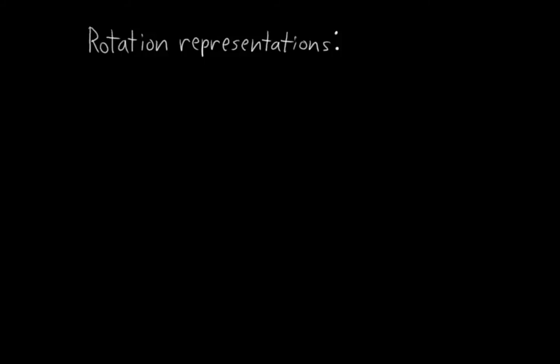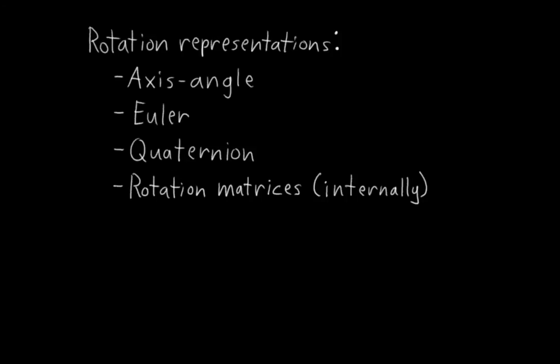Blender has three rotation representations that we can choose from as a user: axis-angle, Euler, and quaternion. Internally, Blender also uses rotation matrices. These are not directly accessible to the user, so I won't go in depth into them, but I'll briefly touch on them at the end of all of this.